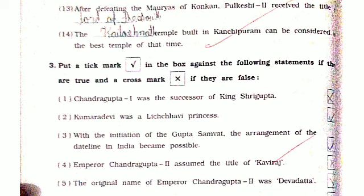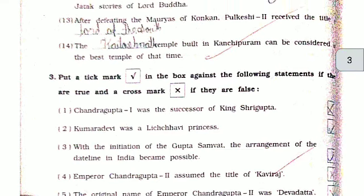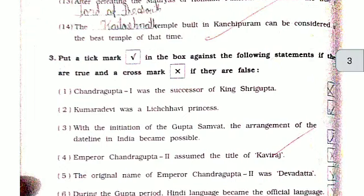Harshavardhan wrote a special play named Naganand based on Jataka stories of Lord Buddha. After defeating the Mauryas of Kanchi, Pulkeshi 2 received the title of Lord of the South. The Kailasanatha temple built in Kanchipuram can be considered as the best temple of that time.